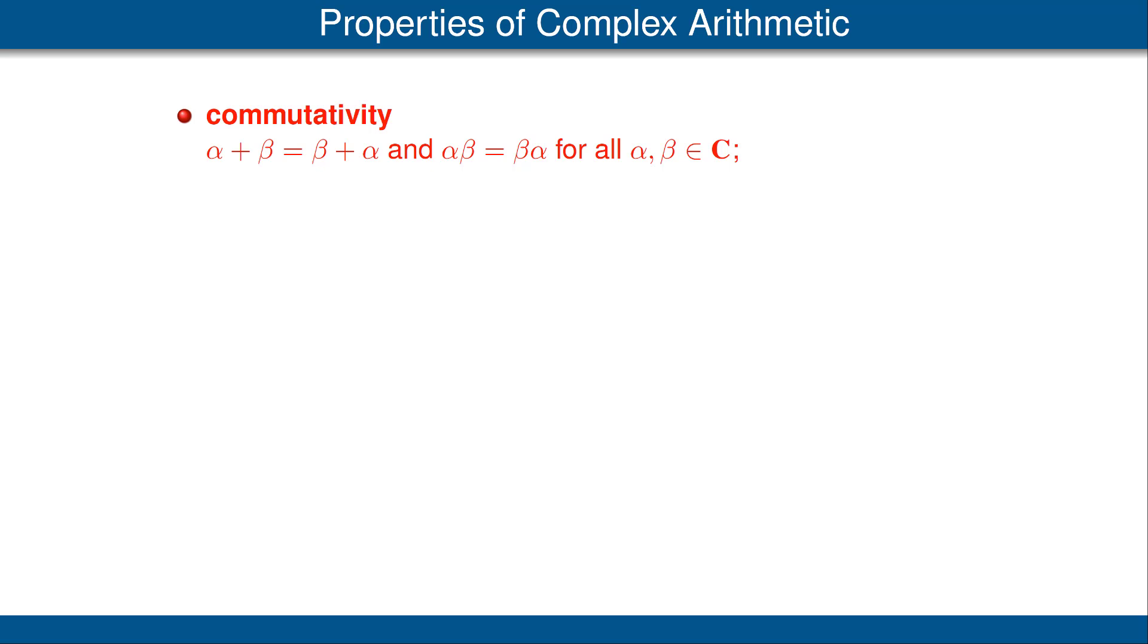Addition and multiplication of complex numbers have the usual properties that you expect from arithmetic. Here is a quick list of those properties. Addition and multiplication of complex numbers is commutative, meaning that order does not matter. Addition and multiplication of complex numbers is associative, meaning that grouping does not matter.